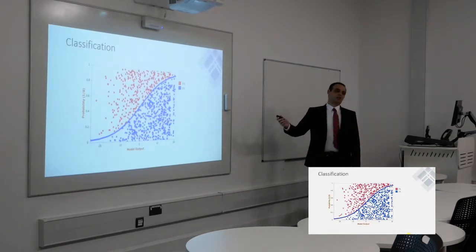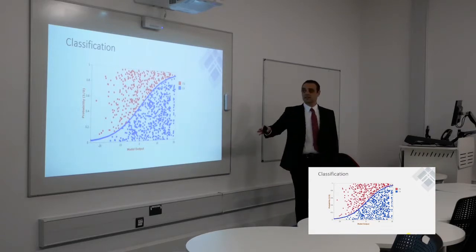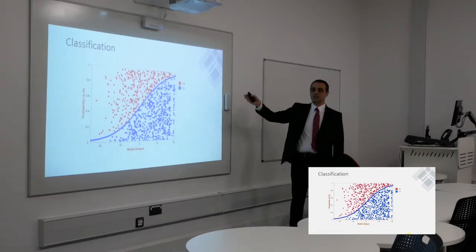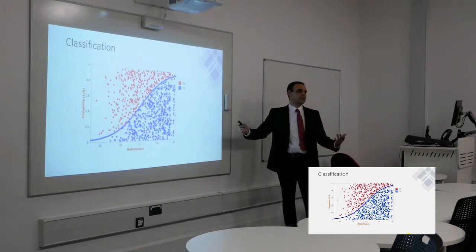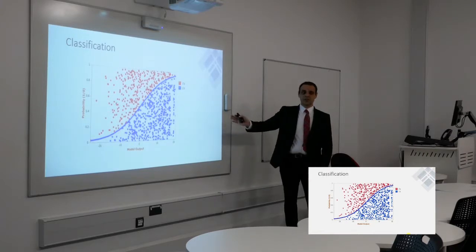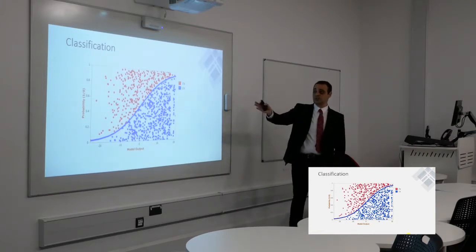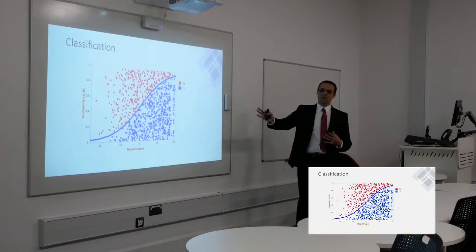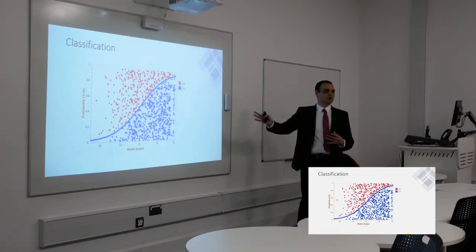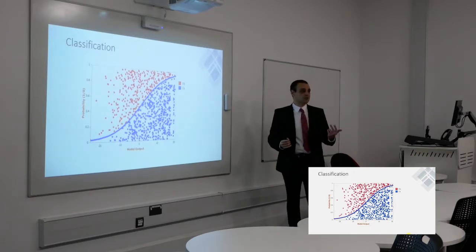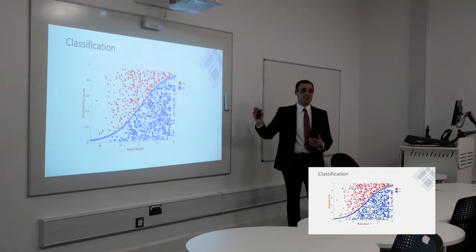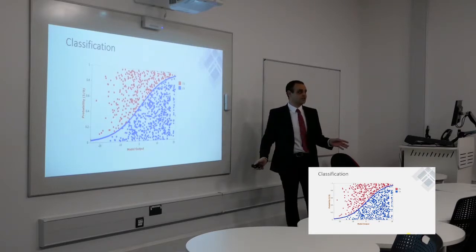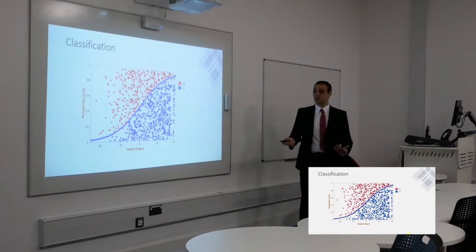That's an example of classification, where the classifier has a function and predicts whether something is zero or one — like the example of whether a project will finish on time or not. Anything in blue would be finishing on time, anything in red would not. There are a lot of variables to consider; it's usually not one or two dimensions but potentially hundreds, which can't be easily visualized, so we simplify to two variables for illustration.